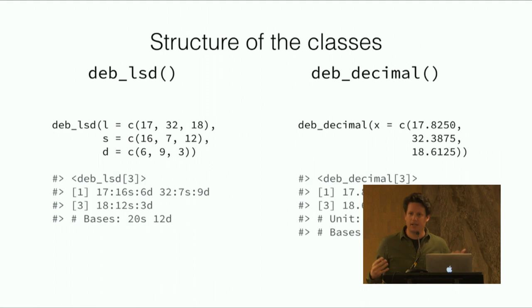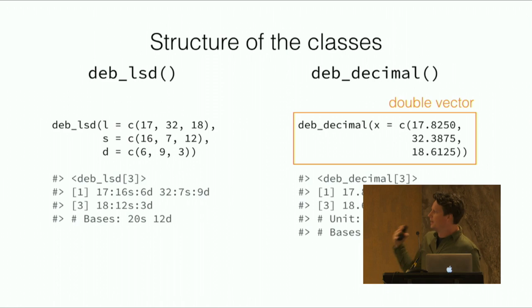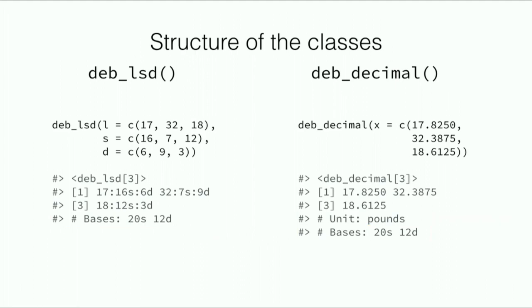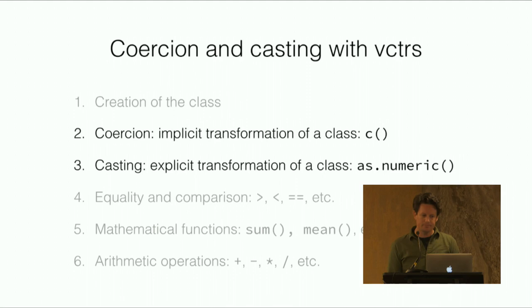Here - I'm skipping some steps - but this is what it looks like if we implement our class. We can start here on the left - we have now a function where we can create a class and we have different things we can add in - the pounds values, the shillings values, the pence values. Here we're going to take our standard basis of 12 and 20. On the right is an equivalent vector that is decimalized. Here we have the printing methods I've chosen. These are things you can create. I've chosen to include the base attributes and the unit attribute so it's very clear. Both work natively with tibble - the record style vectors are not fully integrated but they're getting there.